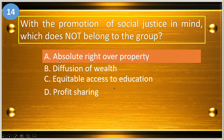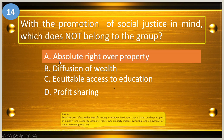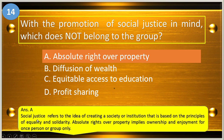Social justice refers to the idea of creating a society or institutions based on the principles of equality and solidarity. Absolute rights over property implies ownership and enjoyment for one person or group only, which contradicts social justice.